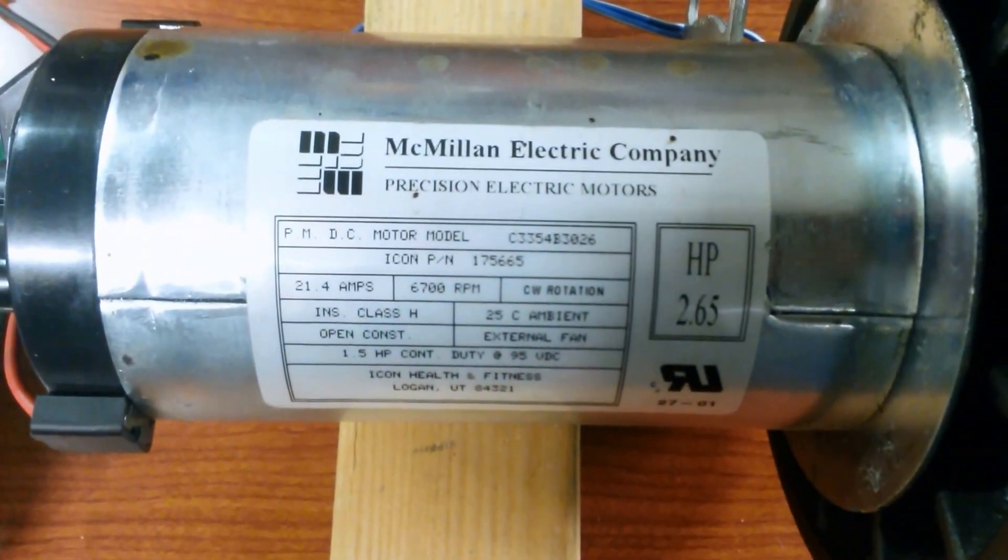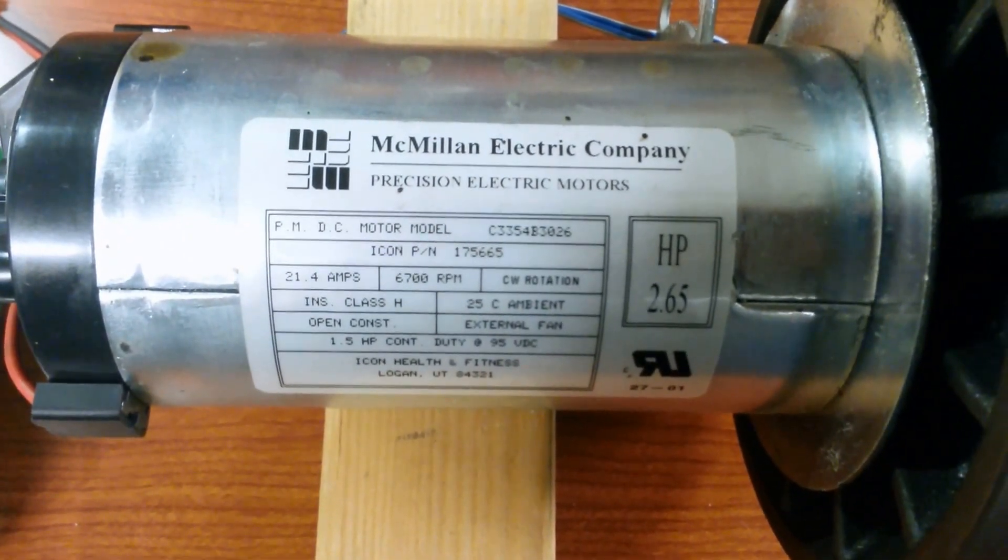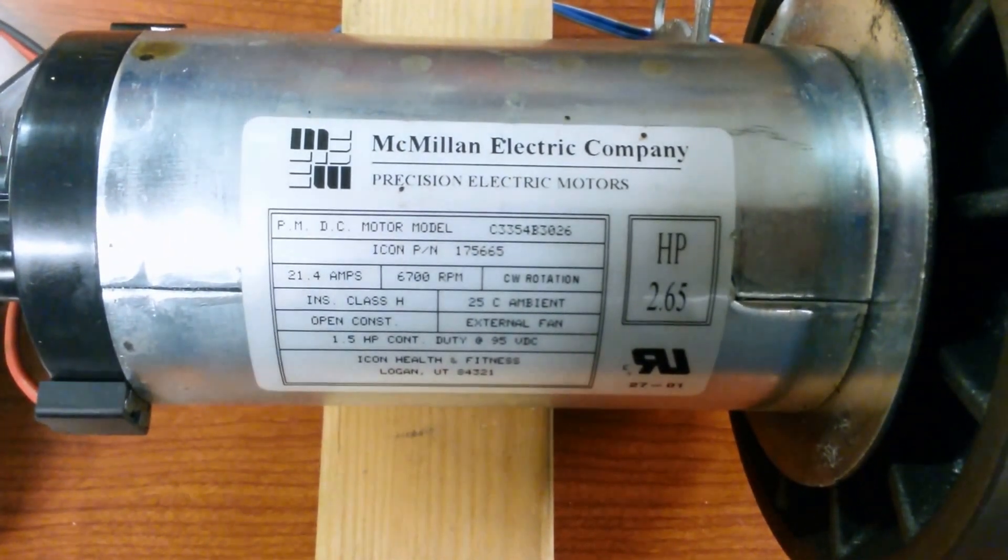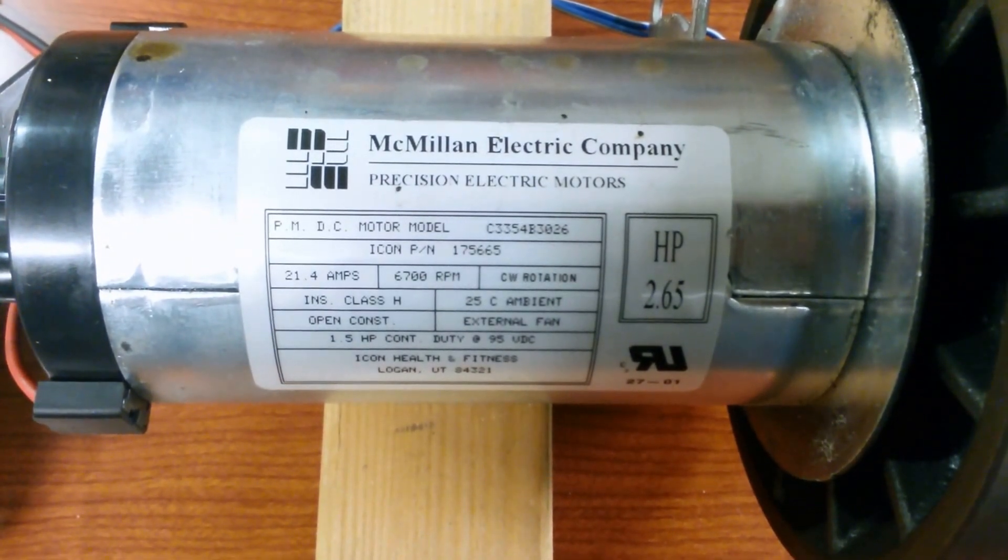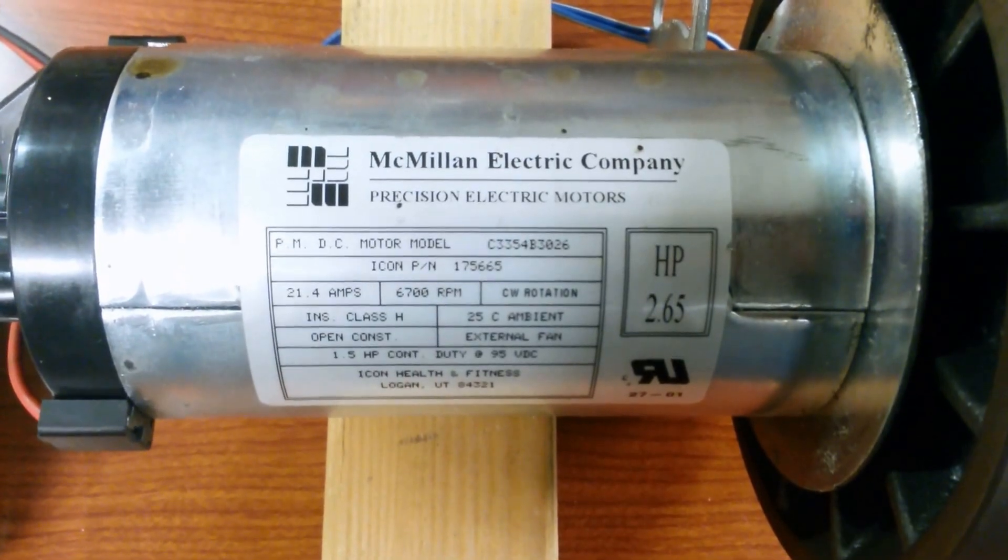It's rated at 21.4 amps at 6700 RPM and 95 volts DC. It will make 1.5 horsepower continuous and it looks like it's rated at 2.65 horsepower.